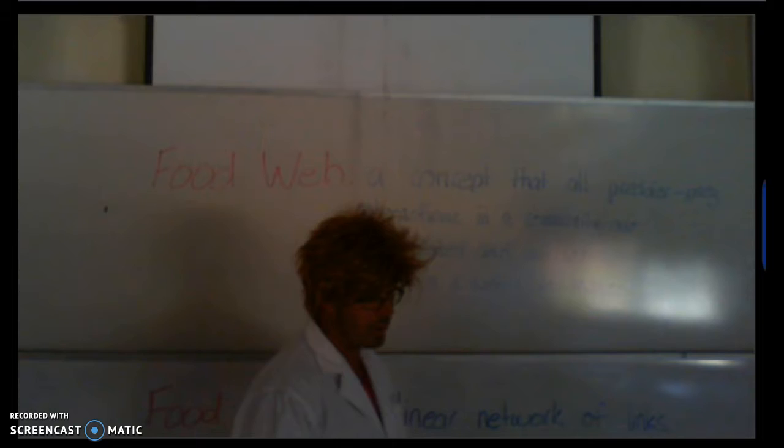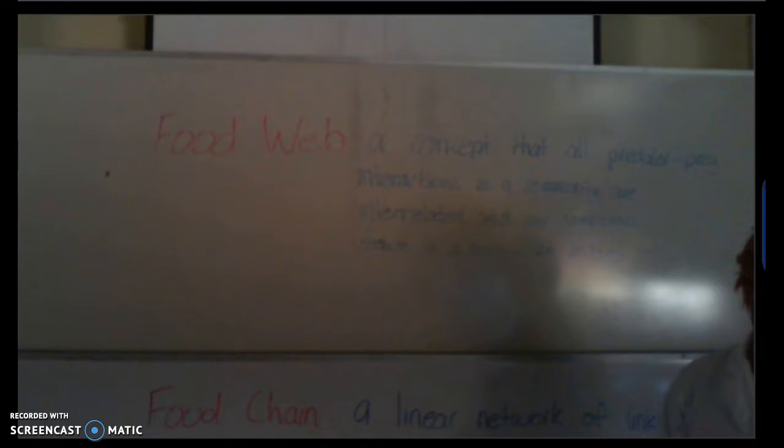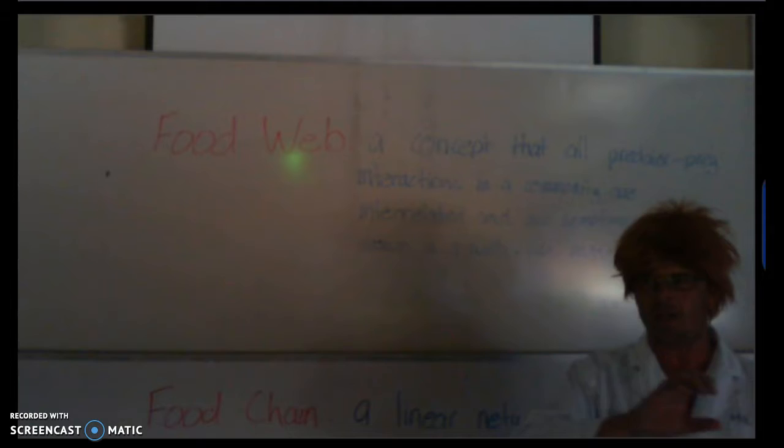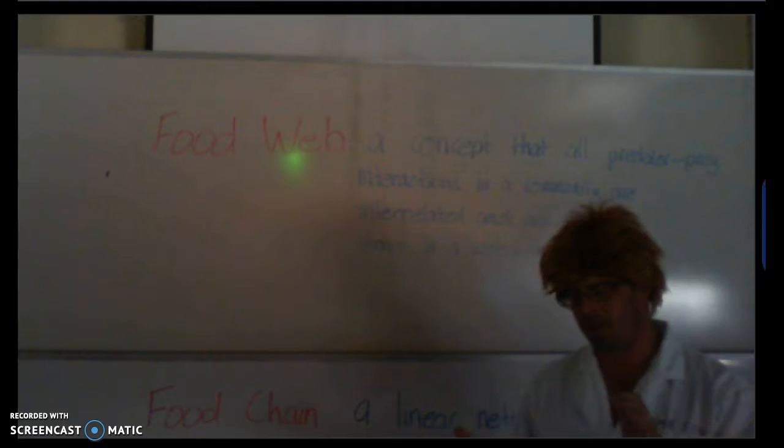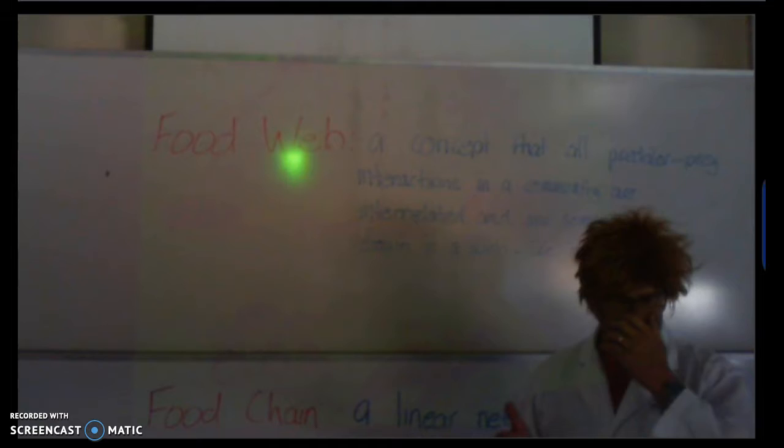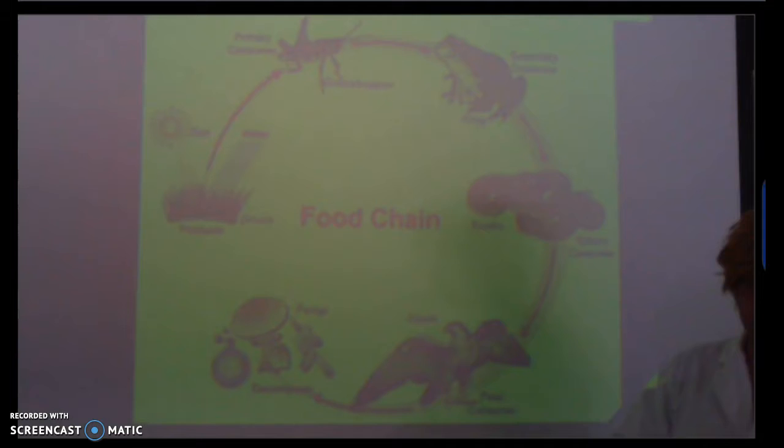So the initial difference between a food chain and a food web: a chain can be drawn in a straight linear line, whereas a food web is like a spider's web with many different connections. A food chain is one line from a producer, like grass or plants, all the way through to the predator. Whereas a food web will have the producer and then a number of different interactions within it.